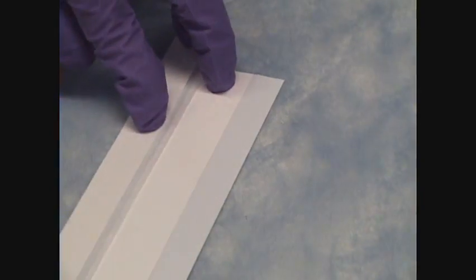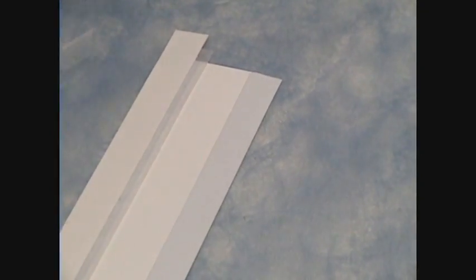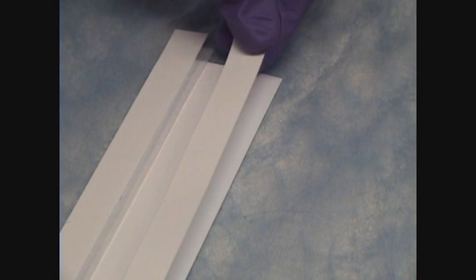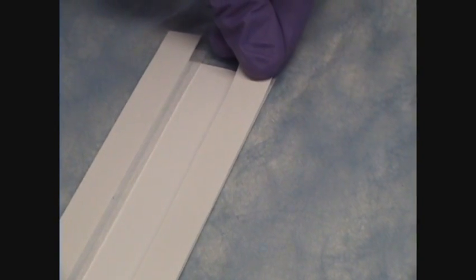Repeat this process with the top. Remove the adhesive covering, line up the top of the card with the top of the cellulose pad, and press firmly. The cellulose pad should overlap the membrane by about two millimeters.